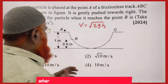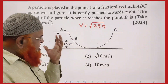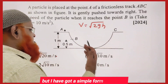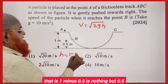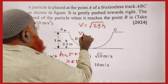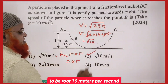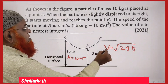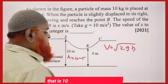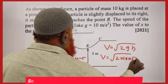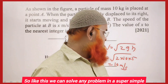A body is dropped from point A and reaches point B. Using the formula v = √(2gh), where h is the height difference. For the first problem h = 1 − 0.5 = 0.5 m, so v = √(2×10×0.5) = √10 m/s. For the second problem h = 10 − 5 = 5 m, so v = √(2×10×5) = 10 m/s.